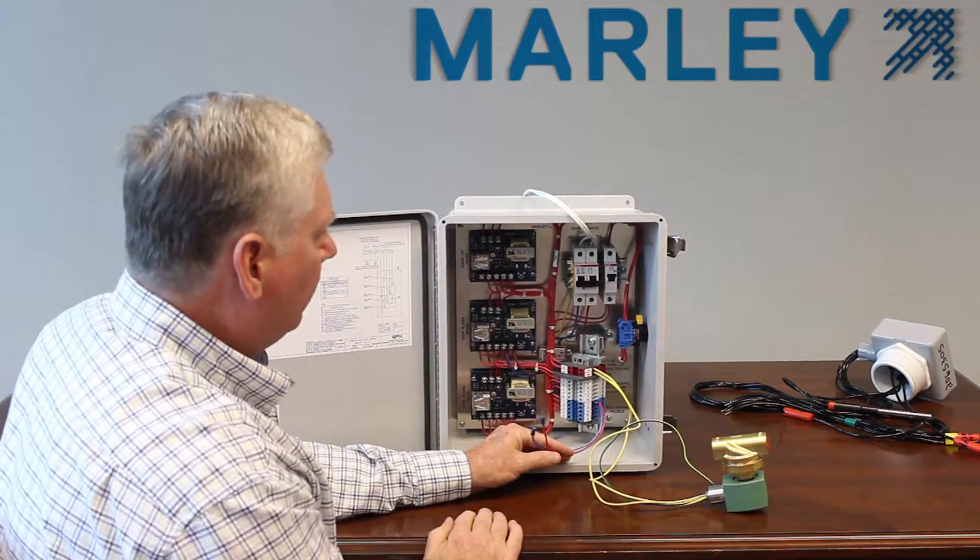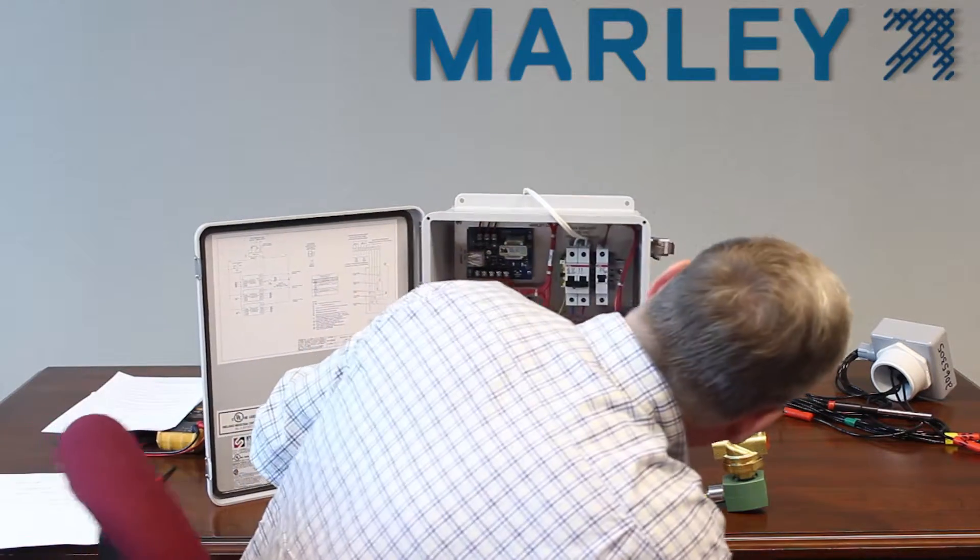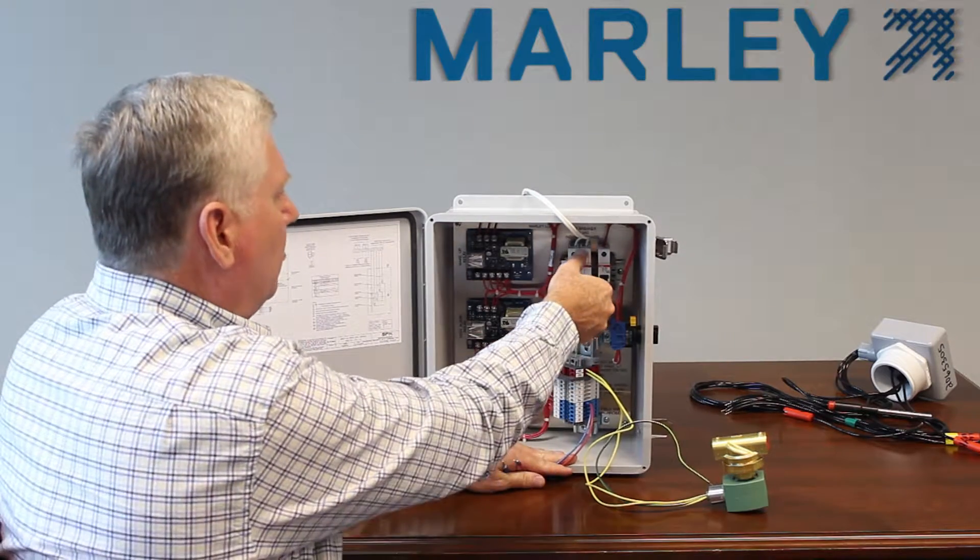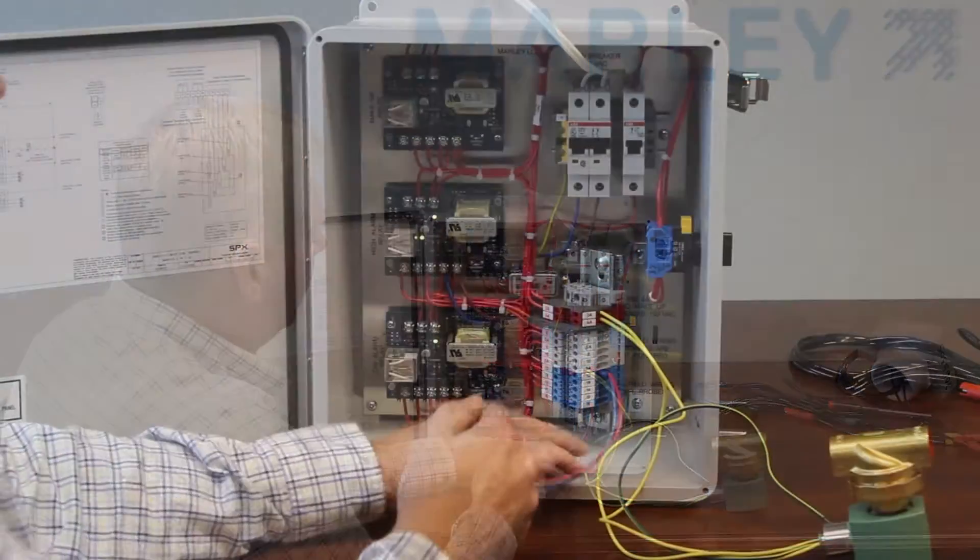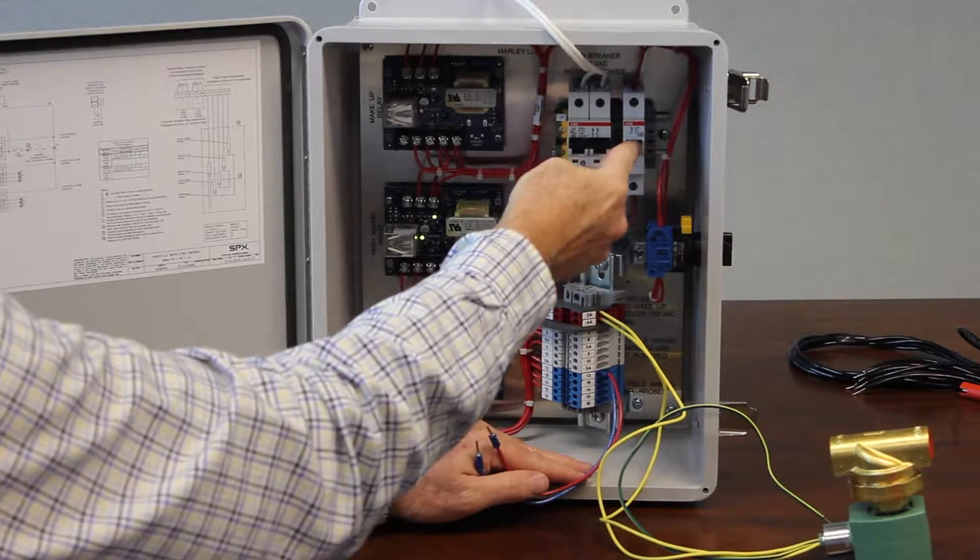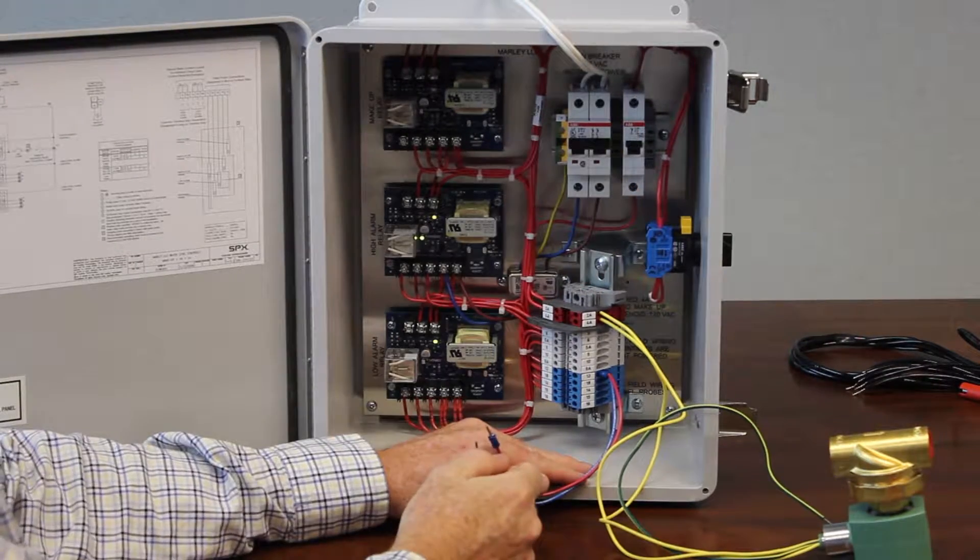So right now my panel is off, my selector switch is in the off position. I'm going to go ahead and apply power to the panel. Now that power is applied to the panel, I also make sure my circuit breaker is applying power for the makeup solenoid.